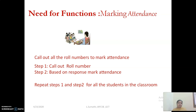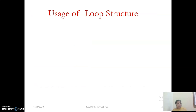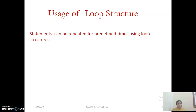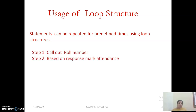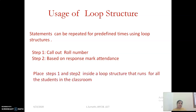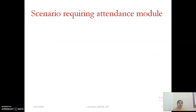If I want to automate it, I can make use of a loop structure. A loop structure allows statements that need to be repeated a predefined number of times — it could be a for loop, while loop, or do-while loop. For this attendance management system, I can place the two steps — calling out the roll number and marking the response — inside the loop, and that loop runs for the number of students in the classroom.